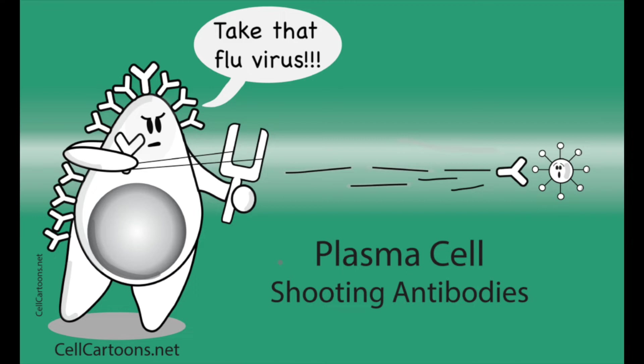In T cell independent activation, B cells receive a danger signal when they encounter a foreign substance and activate. Once activated, B cells do one of two things. They either become an effector B cell that produces antibodies, which tag foreign substances and warn the body to attack the substance.